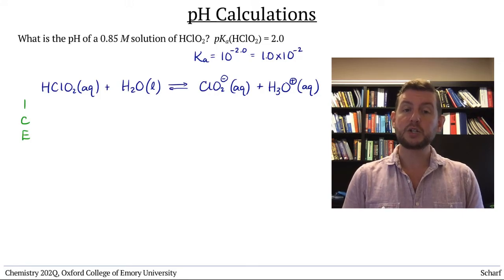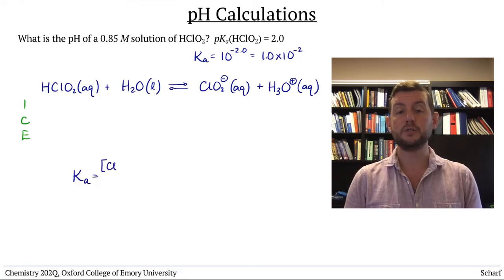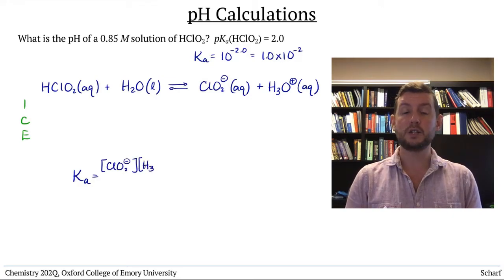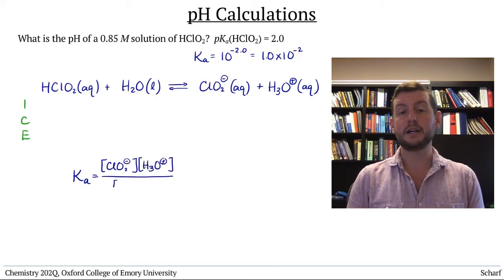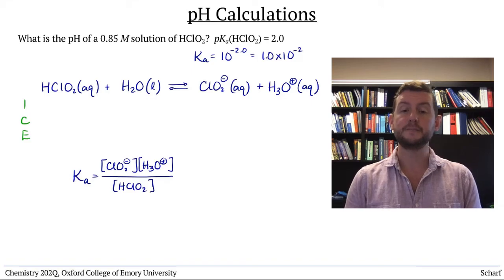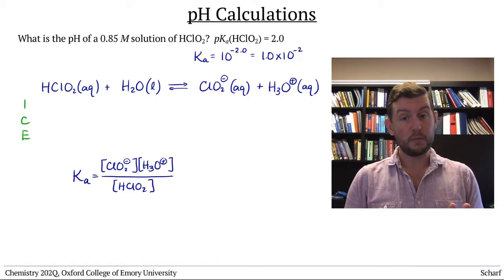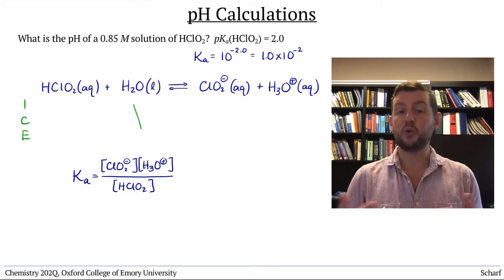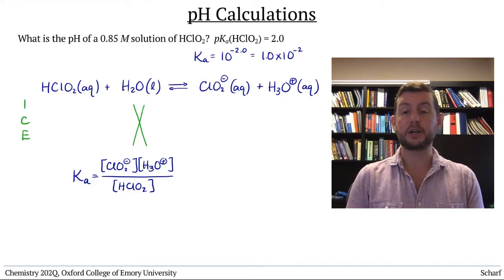The reaction that defines this equilibrium constant is this. And the expression for the Ka is the concentration of ClO2-, times the concentration of H3O+, divided by the concentration of HClO2. Since we omit water from the equilibrium expression, we can ignore the concentration of water in our ICE table.